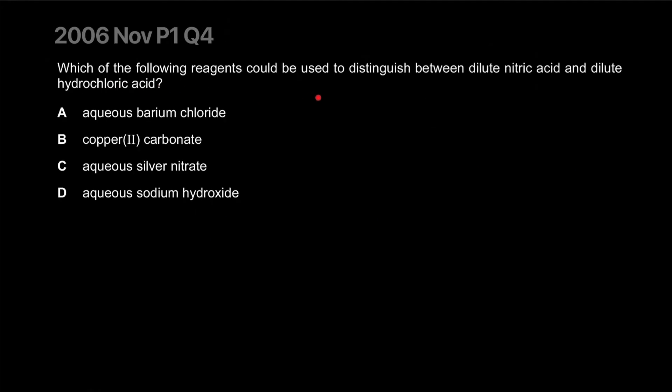Which of the following reagents could be used to distinguish between dilute nitric acid and dilute hydrochloric acid? Let's take a closer look at nitric acid, HNO3, and we have HCl. Aqueous barium chloride, what would that do? Absolutely nothing I think. But with sulfuric acid, the barium would have worked. Copper carbonate would probably do very little as well. It will react with both. Copper nitrate and copper chloride will be formed.